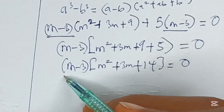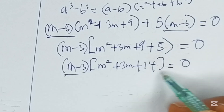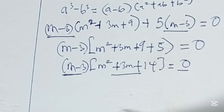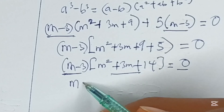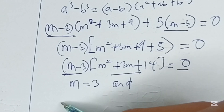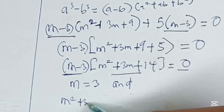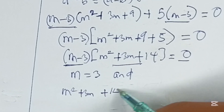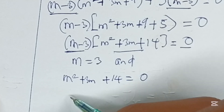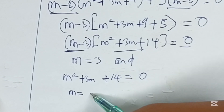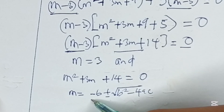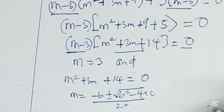Now we can see from here that when the product of two factors is equal to 0, it's either the first one is equal to 0 or the second one is equal to 0. So it's either m is equal to 3, or m squared plus 3m plus 14 is equal to 0. Using the quadratic formula: m equals minus b plus or minus square root of b squared minus 4ac, all over 2a.